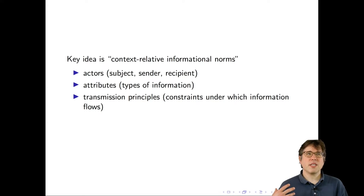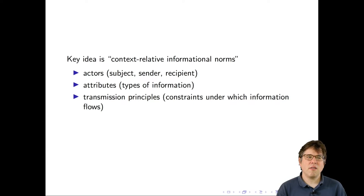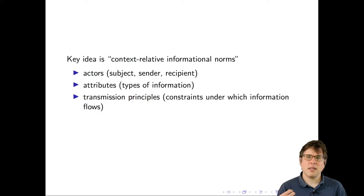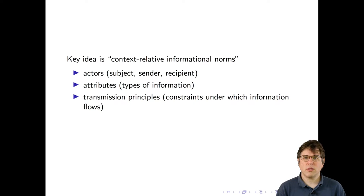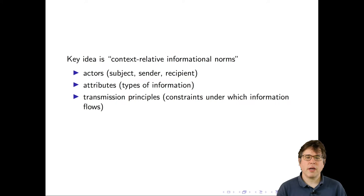Thinking about these three dimensions can help you reason about how people will likely respond to a certain kind of flow of information. We often have this idea that information moving around is creepy. The idea of contextual integrity is the best way to help formalize and crystallize and anticipate the kinds of things that people will think are creepy and the kinds of things they won't.